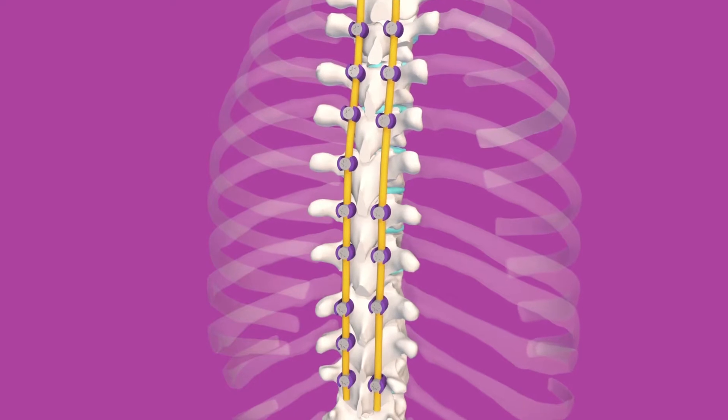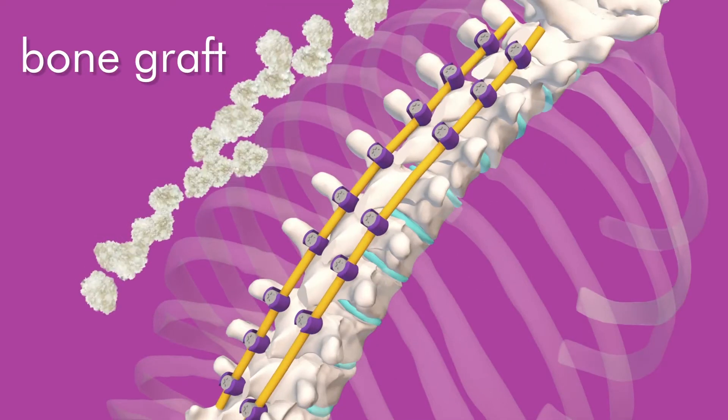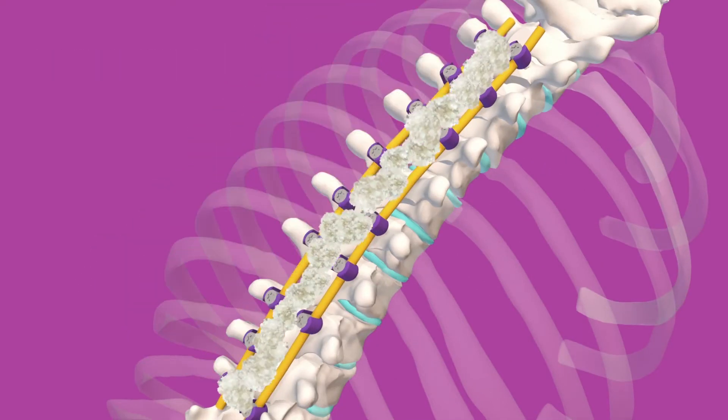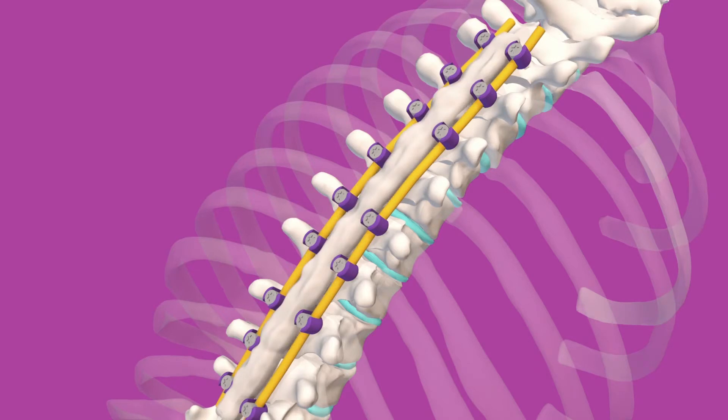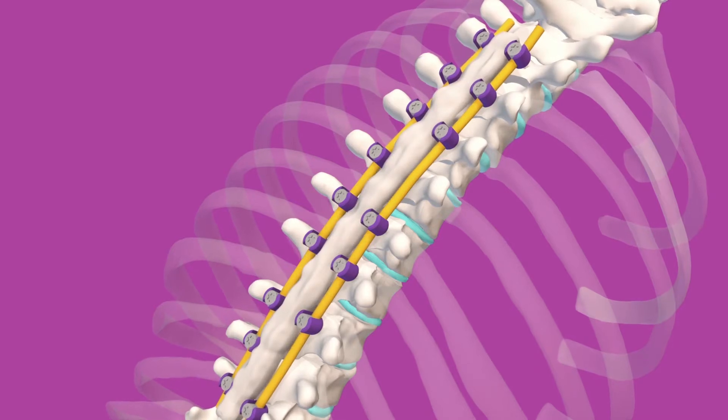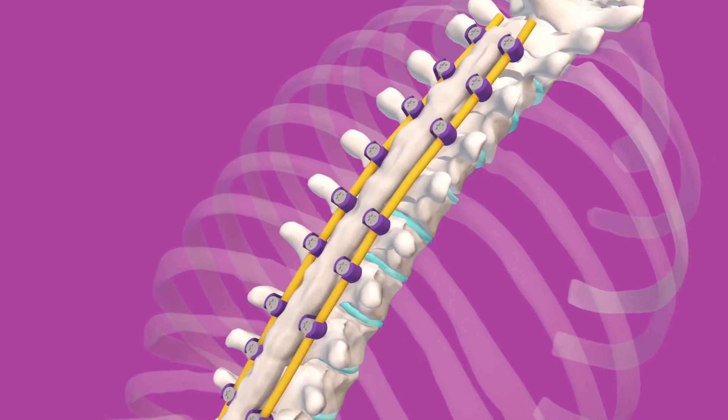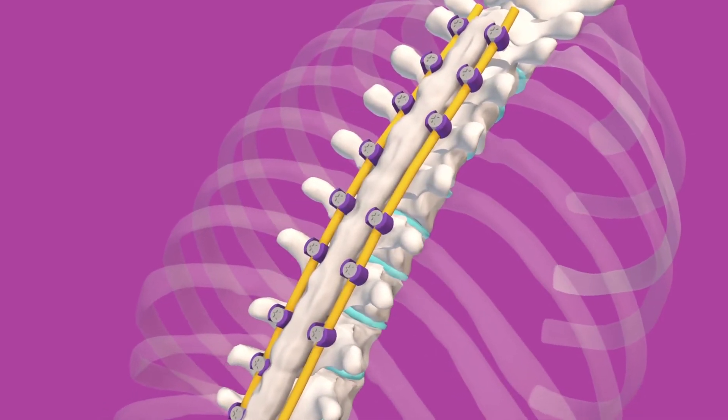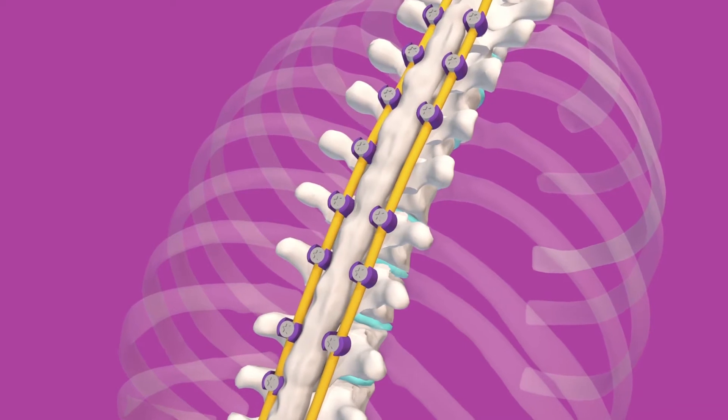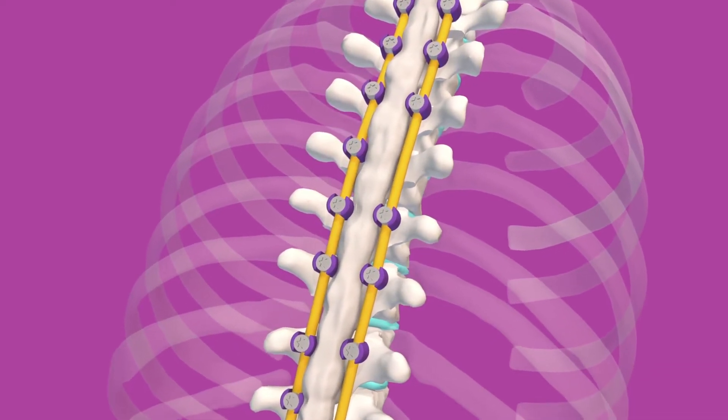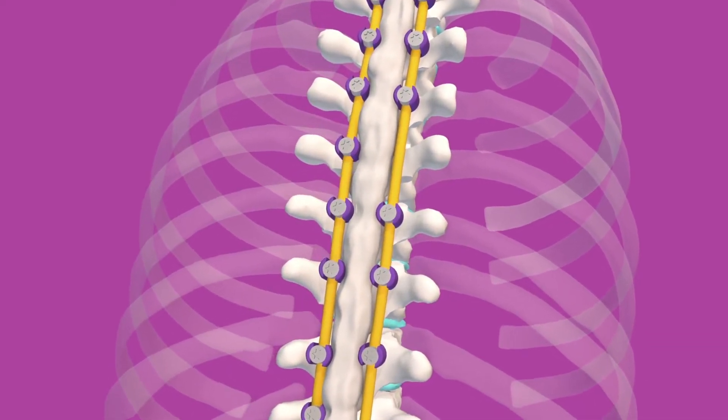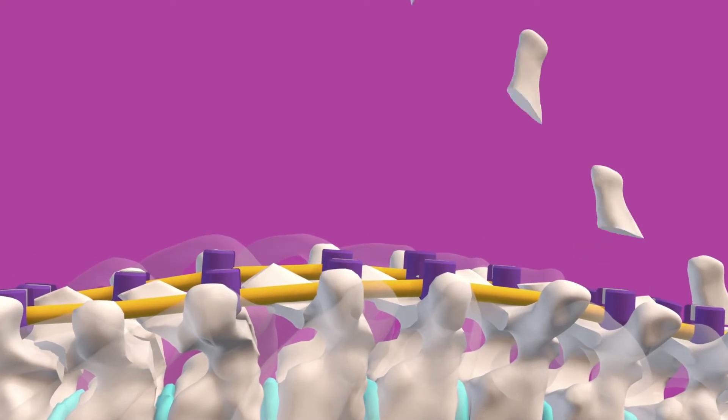After correction is achieved, bone graft is used to fuse the spine in its corrected position and can come from a variety of sources. These sources will depend on the surgical approach and will likely include a combination of the bone removed from the spine, such as the facet joints that were removed in the beginning and then the spinous process that you see here.